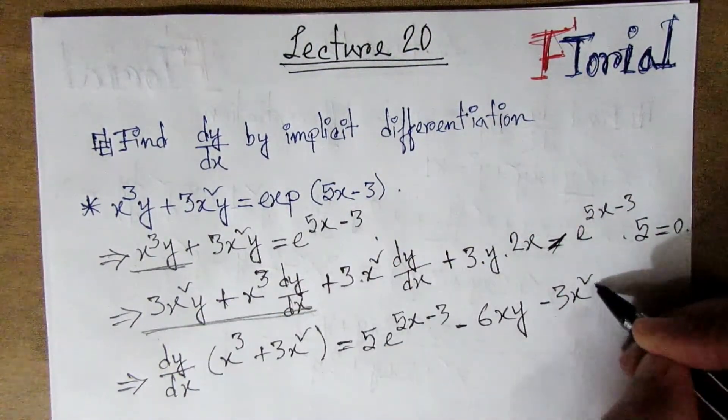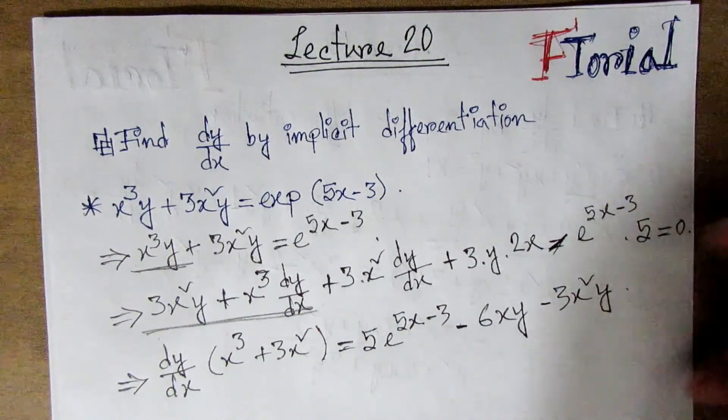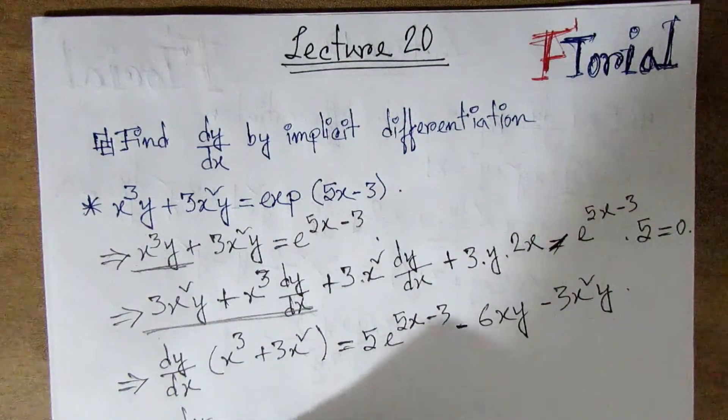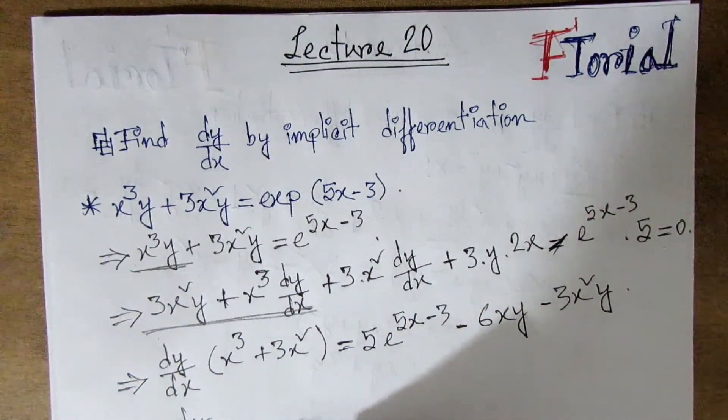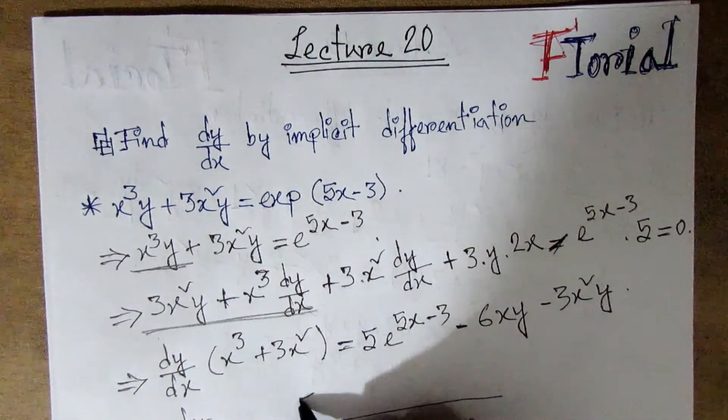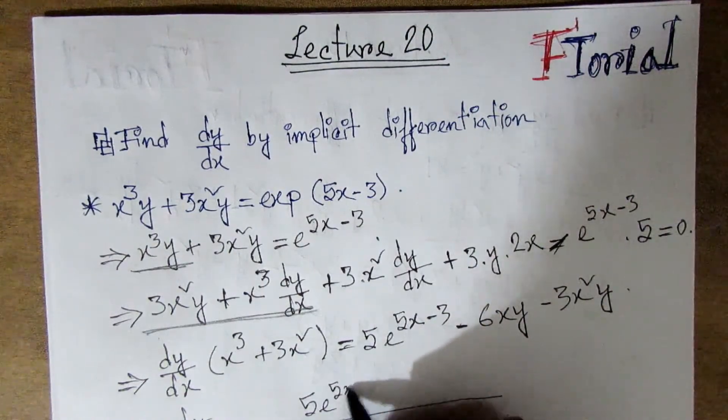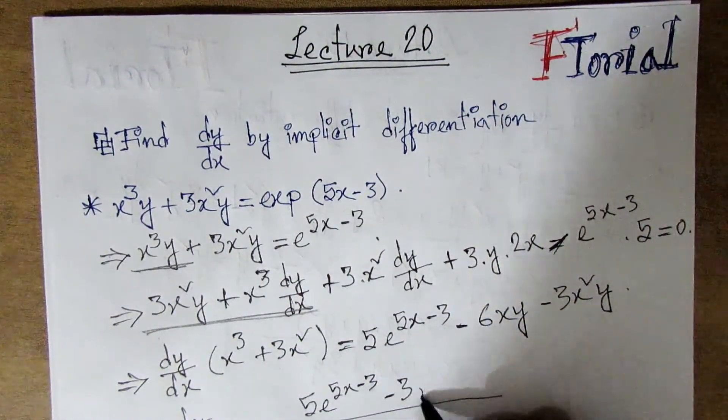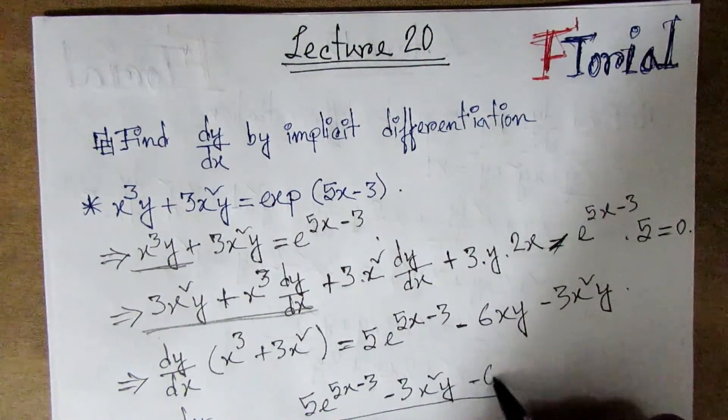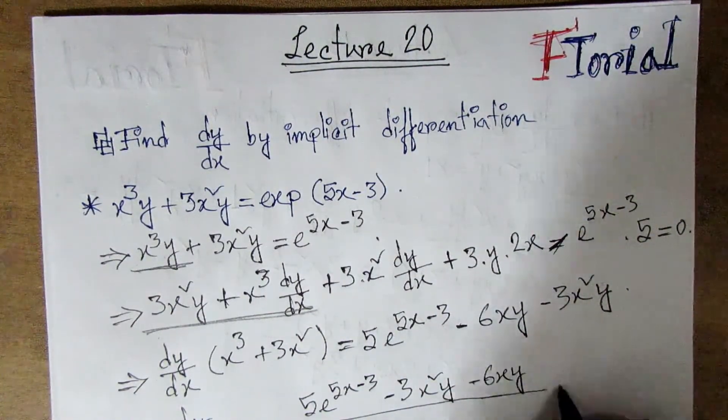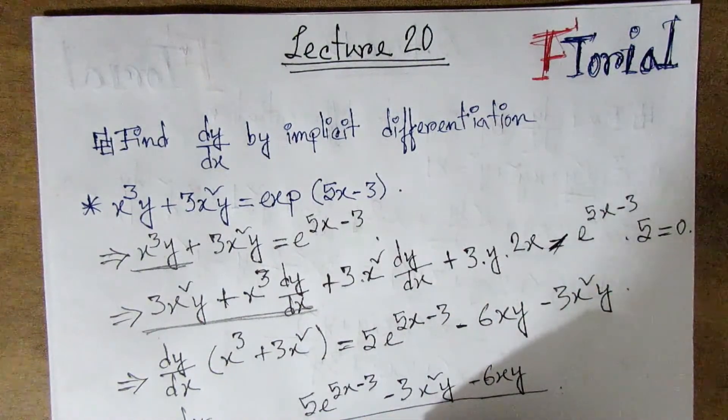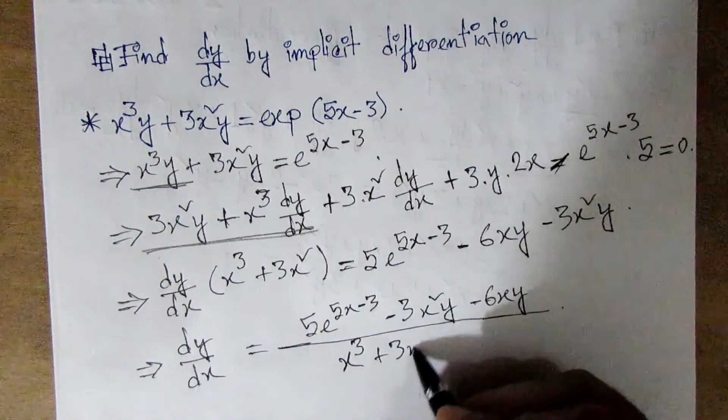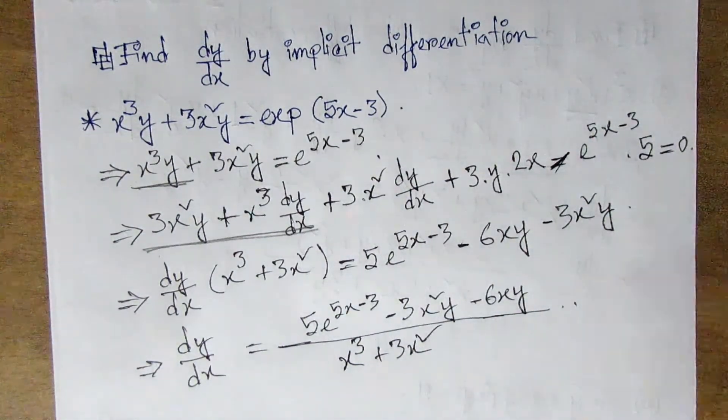Factoring out dy/dx, we get dy/dx equals (5e^(5x-3) - 3x²y - 6xy) divided by (x³ + 3x²). This is the final solution using implicit differentiation.